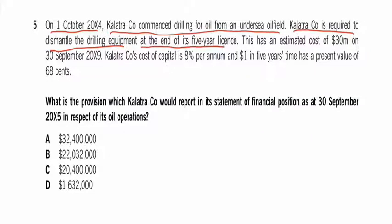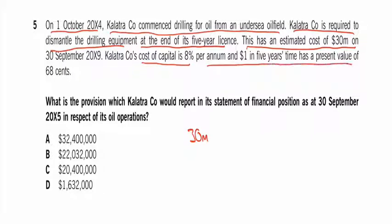At the end of the 5-year license, it's in the future and it's got a cost of 30 million. So we need to bring that down to its present value. The cost of capital is 8%, and $1 in 5 years' time has a present value of 68 cents. Simply times by 68 cents over 100 cents — that's discounting down.